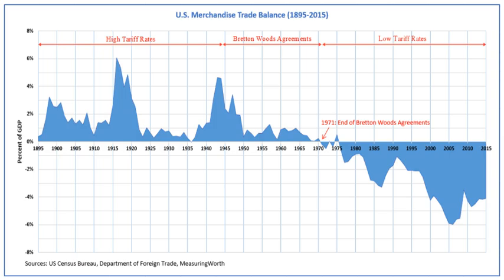According to economic historian Brad DeLong, on almost every point where he was overruled by the Americans, Keynes was later proved correct by events. Today these key 1930s events look different to scholars of the era — see the work of Barry Eichengreen's Golden Fetters: The Gold Standard and the Great Depression, 1919–1939. In particular, devaluations today are viewed with more nuance.